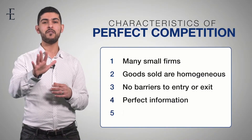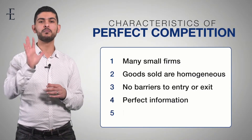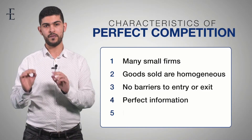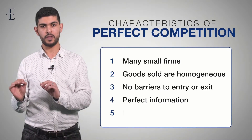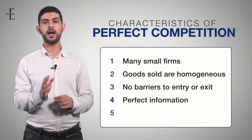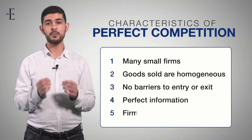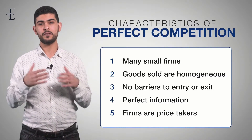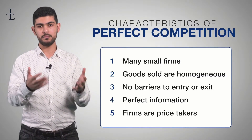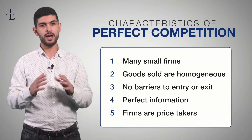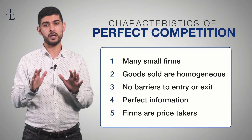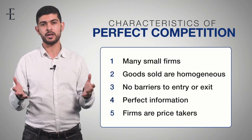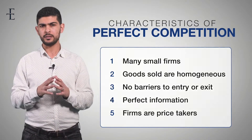Finally, number five is the most important one and the most unique thing about perfect competition. Number five is that the firms are price takers. That means if you're selling in this market, you have to accept the market price as given. It isn't up to you to determine the price.